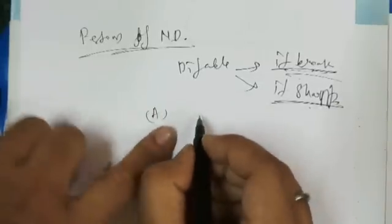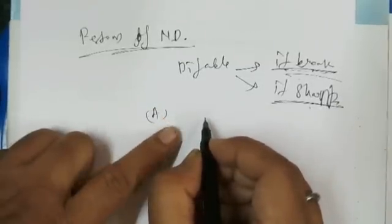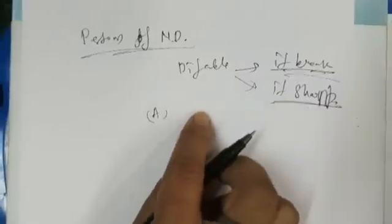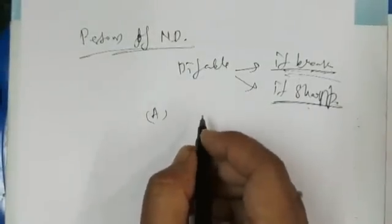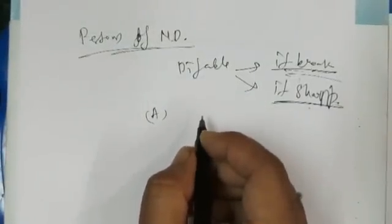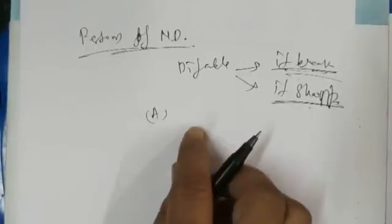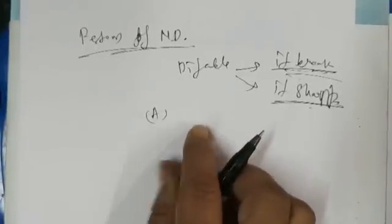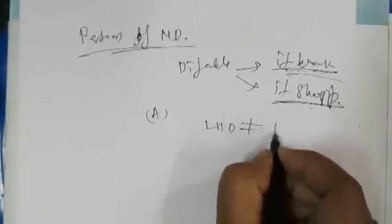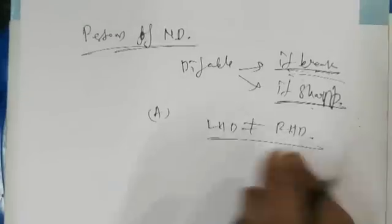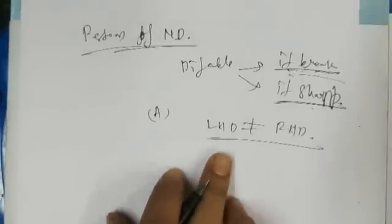Point A: if the function is discontinuous, no need to check further. Corner point: if a function has a corner point, that is left-hand derivative not equal to right-hand derivative, that function must be not differentiable.